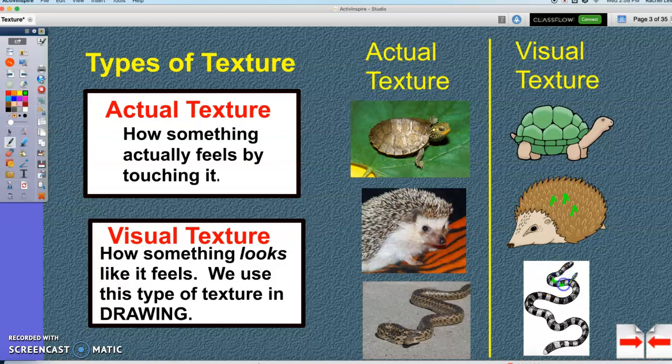Or we could draw tiny little lines or ovals on our snake to show that the snake is scaly. This makes your drawing look much more realistic if you add those descriptive lines in your drawings for visual texture.